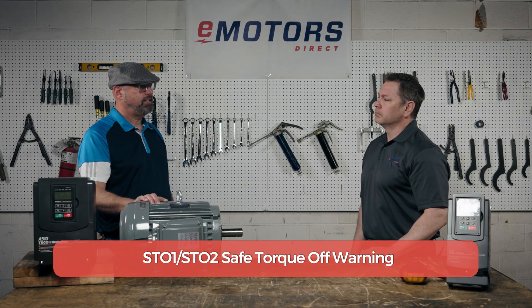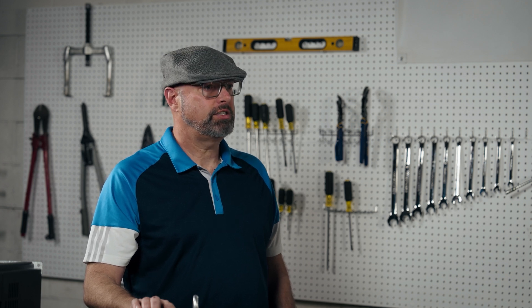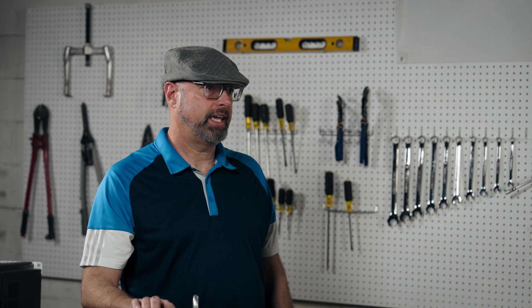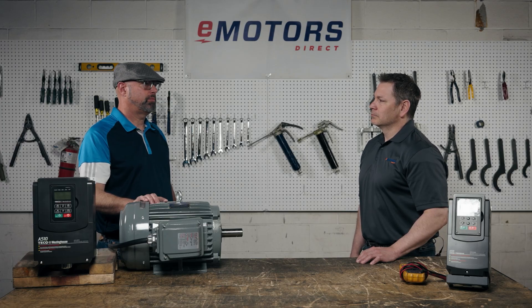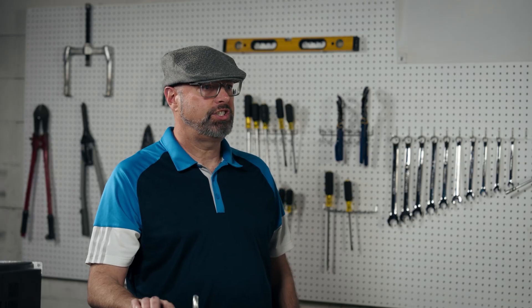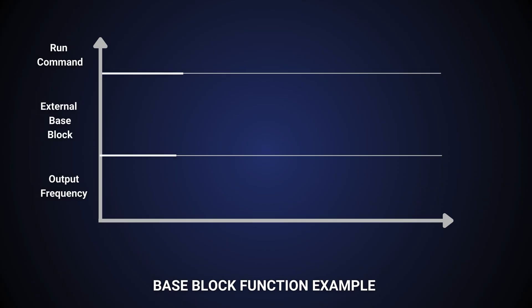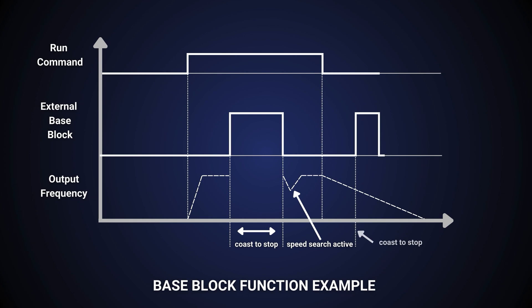ST01 and ST02 — safe torque off. The VFD will come with factory installed jumpers on SF1, SF2, and SG. These are to be used for a safe torque off application. It is common to see end users try to use these inputs as enables, but the trick is the VFD treats them like a fault that needs to be reset each time they are open. For an enable, I suggest using a digital input programmed to a base block function. A base block is when the VFD is in a state where it will not go into a run condition. There are some built-in protections such as too many consecutive overload faults in a short period of time. You can, however, program a digital input to activate a base block.